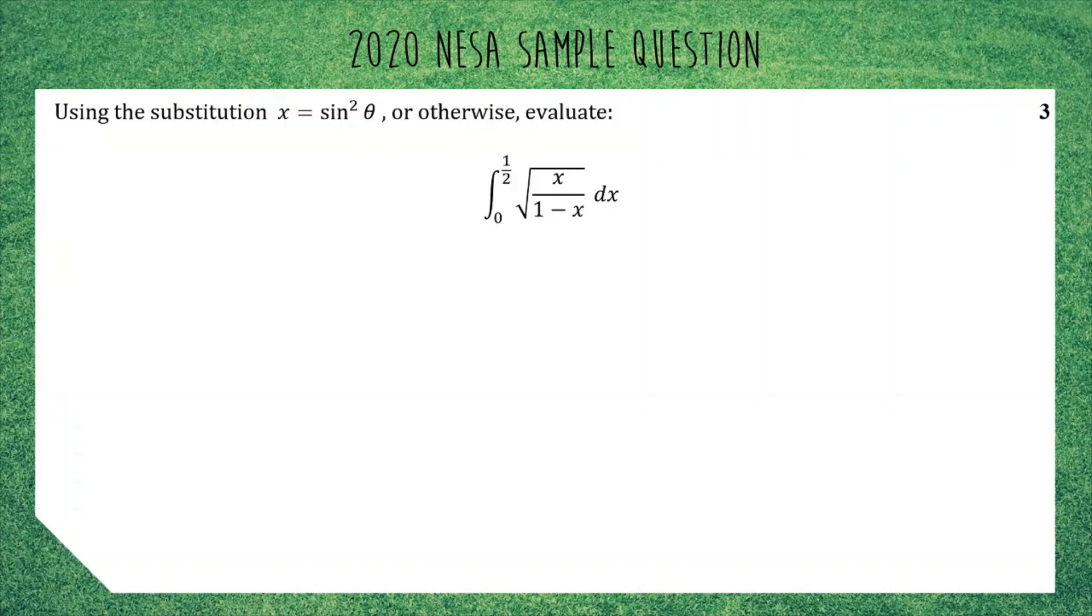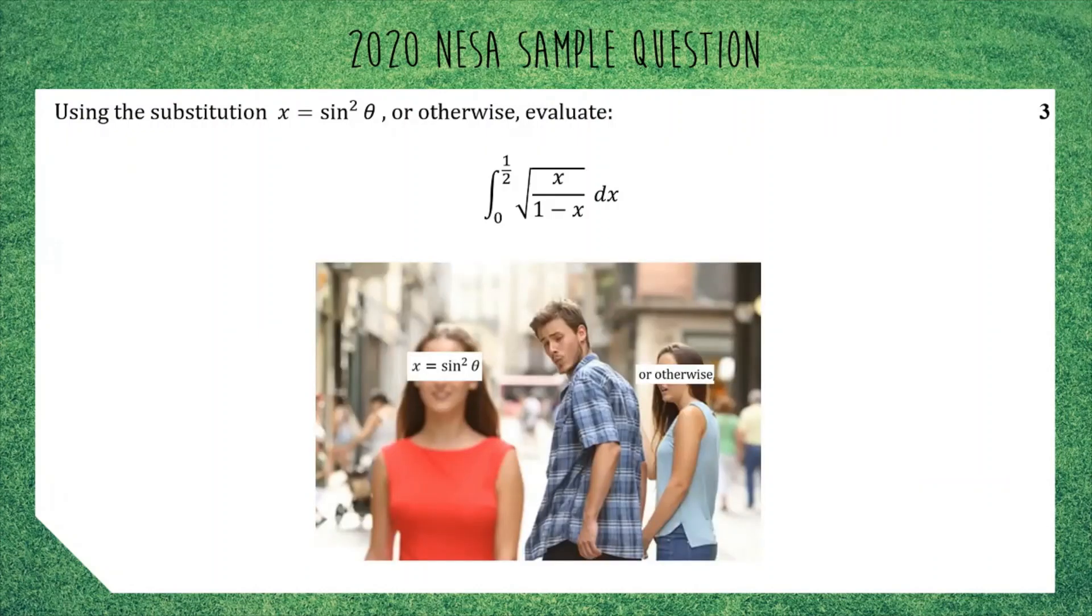Alright, let's get started. Okay, sorry, I should specify when I say useful for mechanics, I mean useful in the extension 2 topic mechanics, not necessarily useful for people who are mechanics, that I'm aware of. Okay, so let's get started. First of all, as the question says, we can use the substitution x equals sin squared, or there's another option, otherwise. I'm going to pretend that doesn't exist because I personally can't see a way of doing it without the substitution x equals sin squared. If you can, by all means, let me know in the comments, I look forward to that.